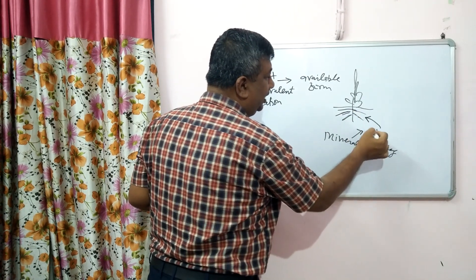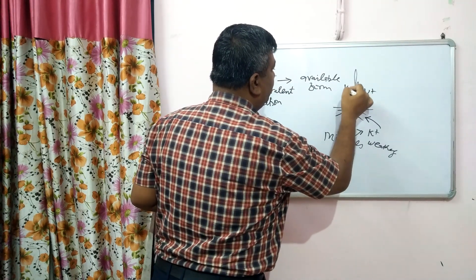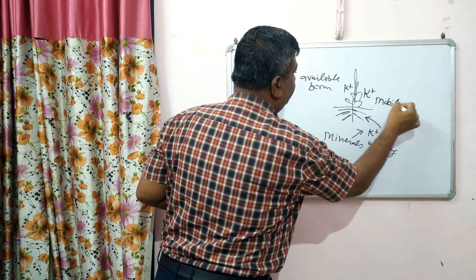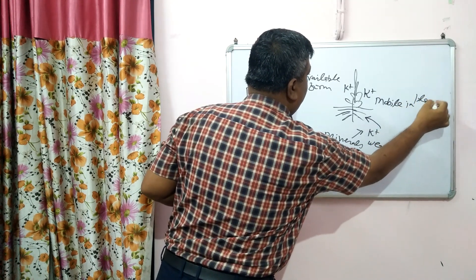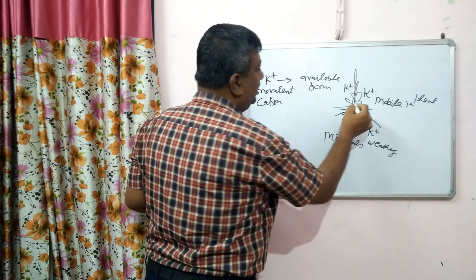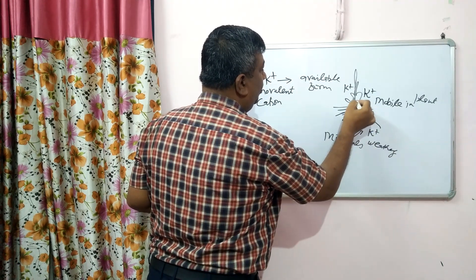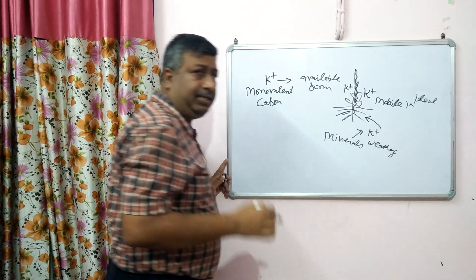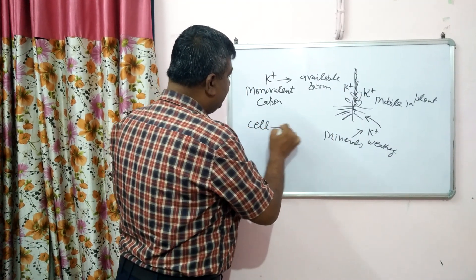This potassium is absorbed in K+ form and is then translocated. It is mobile in plant but less mobile in soil. It is translocated from root to lower leaves and from the lower root to upper leaves, and in the cell it remains as such.